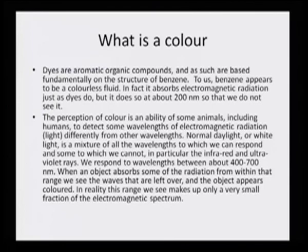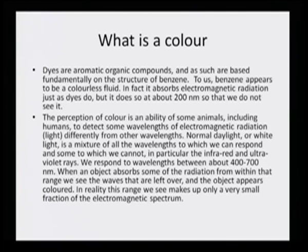The perception of color is an ability of some animals, including humans, to detect some wavelengths of electromagnetic radiation — that is, light — differently from other wavelengths. Normal daylight or white light is a mixture of all the wavelengths to which we can respond and some of which we cannot, in particular the infrared and the ultraviolet rays. We respond to wavelengths between about 400 to 700 nanometers. When an object absorbs some of the radiation from within that range, we see the waves that are left over and the object appears colored.